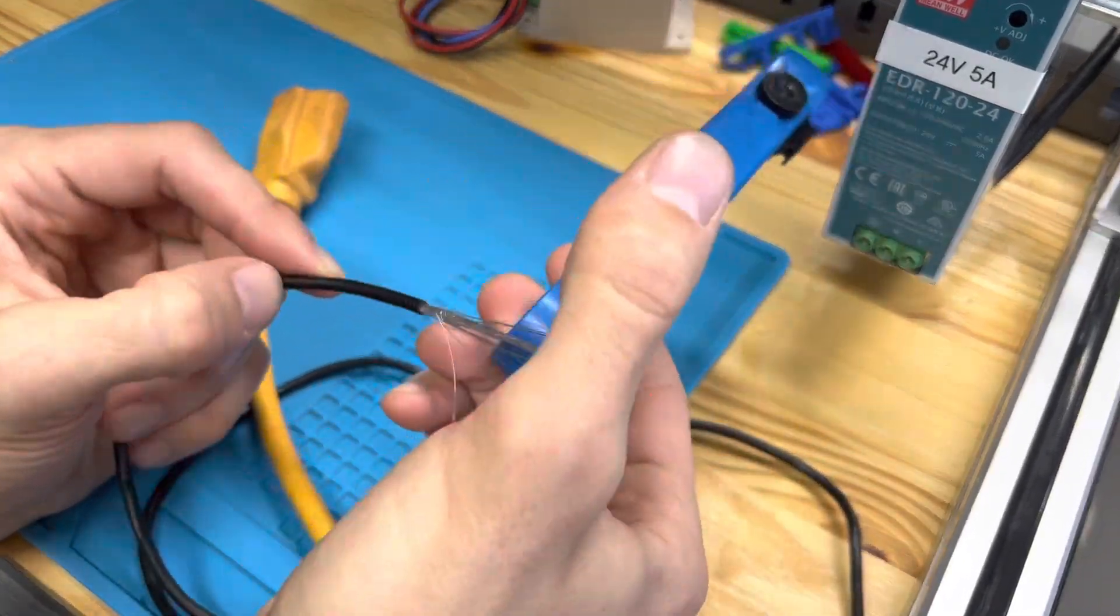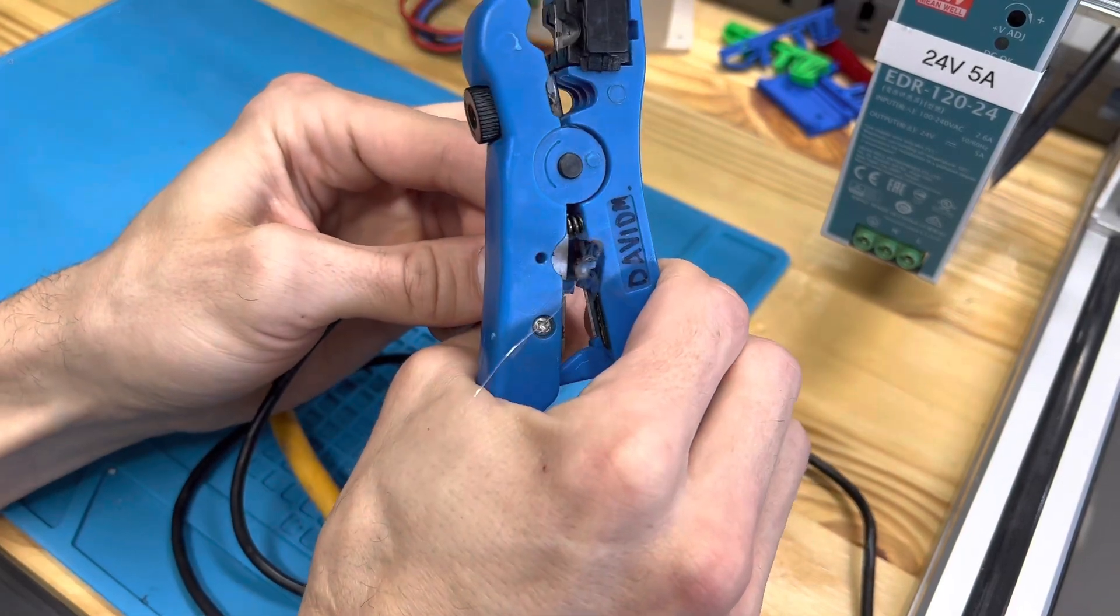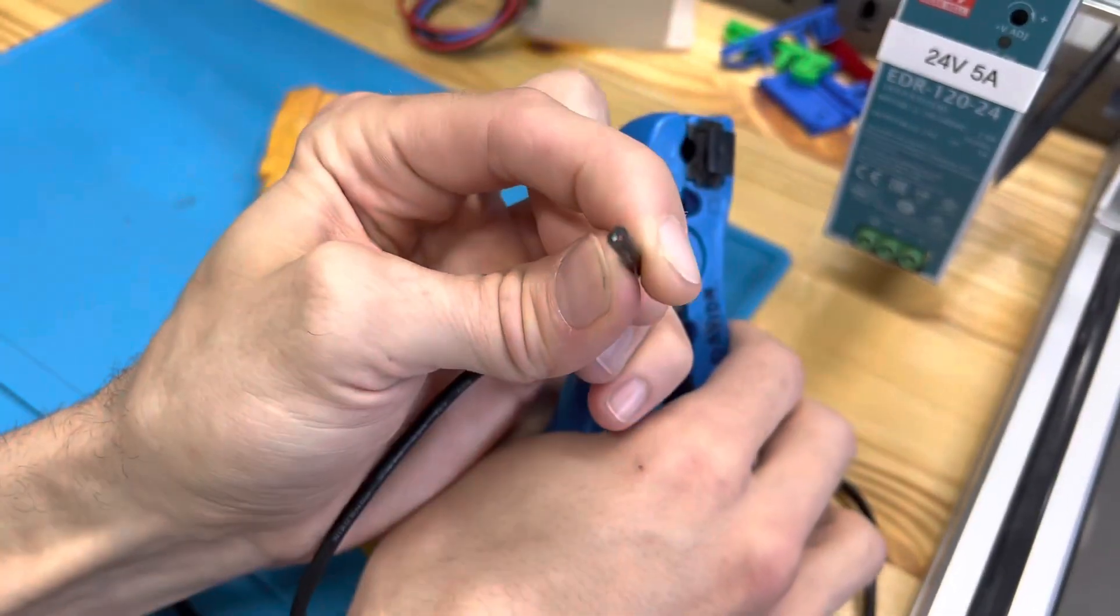On the back of the stripper there's actually a wire cutter. So you can find the location where you want to cut and clamp down and have a nice clean cut.